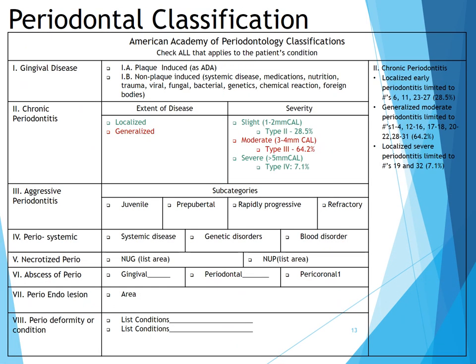Our periodontal classification includes: localized early periodontitis limited to numbers 6, 11, and 23 to 27 at 28.5%; generalized moderate periodontitis limited to numbers 1 through 4, 12 through 16, 17 through 18, 20 through 22, and 28 through 31 at 64.2%; and localized severe periodontitis limited to numbers 19 and 32 at 7.1%.